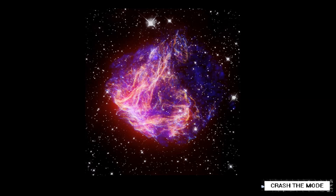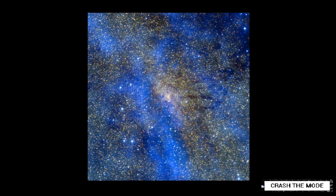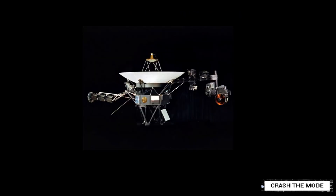Even if we could travel at the speed of light — about 671 million miles per hour — it would take us about 100,000 years to travel across our galaxy. Voyager 1, for comparison, has traveled at 38,000 miles per hour. These distances are so large that they're unfathomable to the human mind.